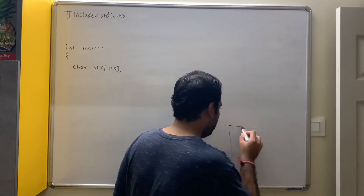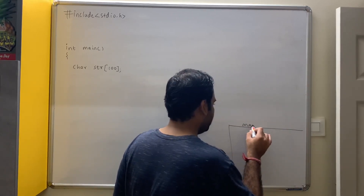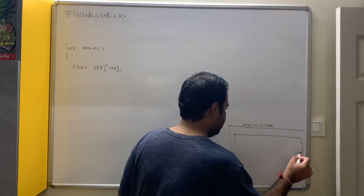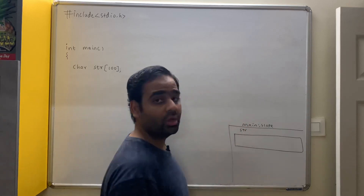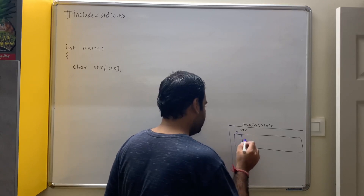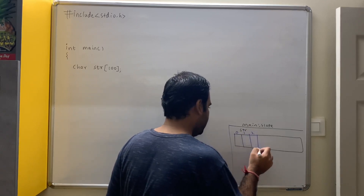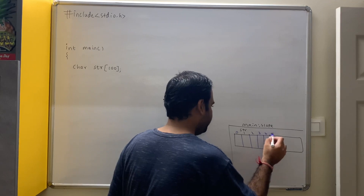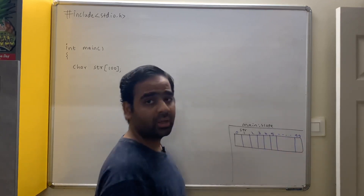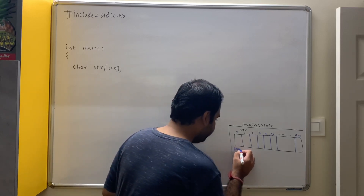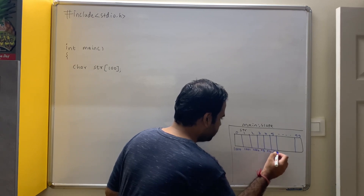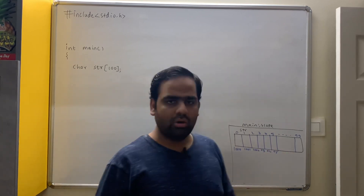The variable name is str. It has 100 indices — 0, 1, 2, 3, 4, 5 and so on up to 99. Let us assume the base address to be 1000. This is 1001, 1002, 1003, 1004, 1005 and so on. We need to read the string. We say printf("enter string") and we read it using scanf with format specifier %s and str.